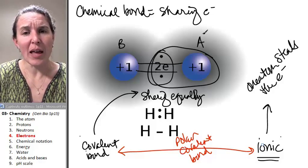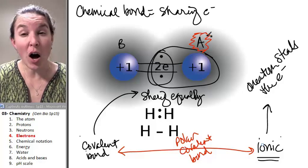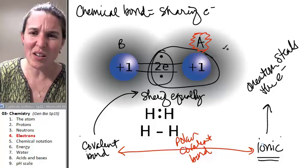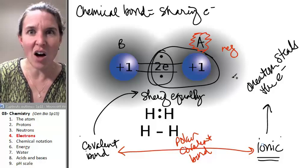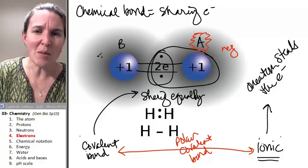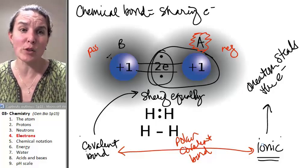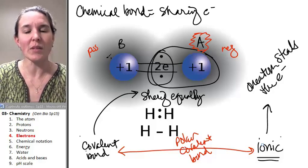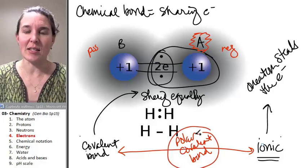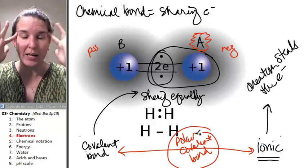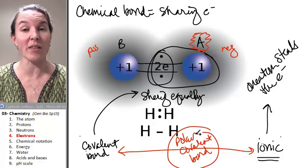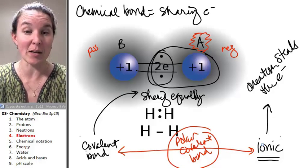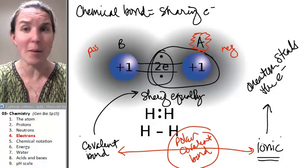And you could figure it out. If, for example, A is kind of hogging the electrons, do you kind of agree that it would be sort of negative, because it's hogging the electrons? And B would be sort of positive, because it's kind of losing its electrons. It's losing its negative charges. That would be a polar covalent bond. This concept of polarity is really important when we start thinking about water. And we're going to talk about water today.